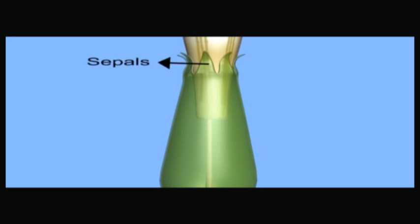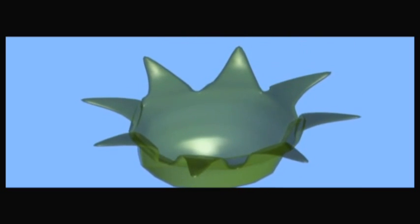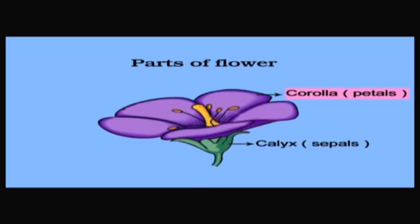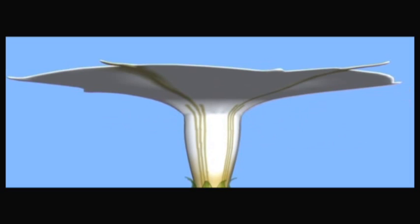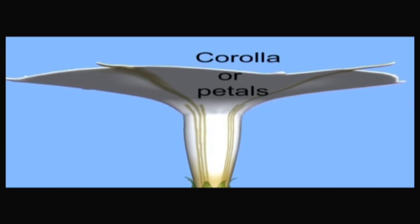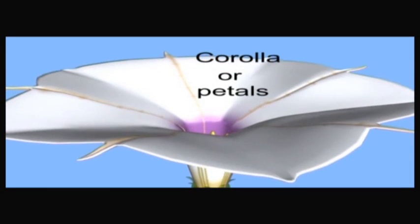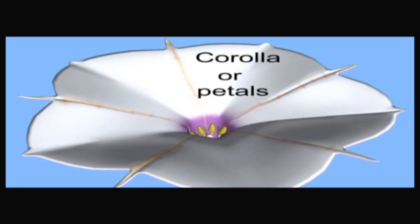The outermost whorl consists of five green leaf-like structures known as sepals. All the sepals together are known as calyx. In datura, the sepals are united to form a tube-like structure. It protects the internal parts of the flower.